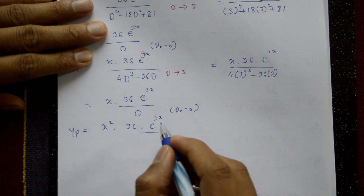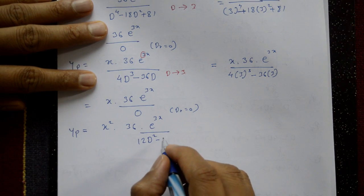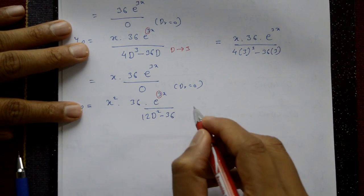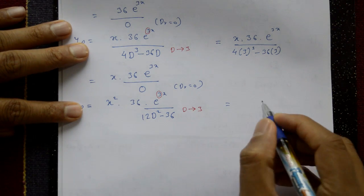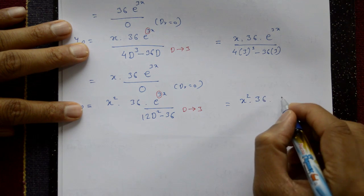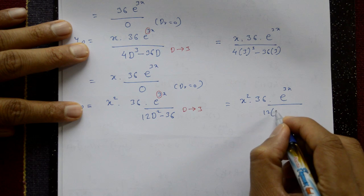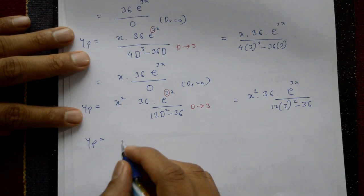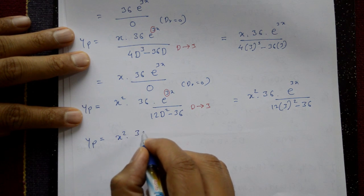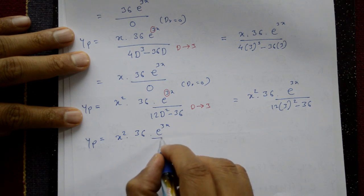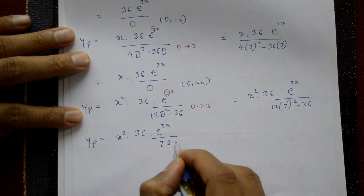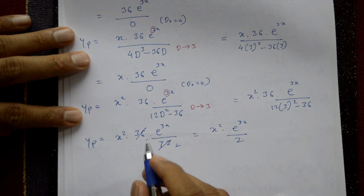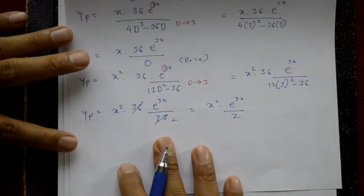Multiplying by x again gives x², and differentiating the denominator again: 12D² - 36. Now using type 1, a = 3, put D = 3: x² · 36e^(3x) / (12·3² - 36) = x² · 36e^(3x) / (108 - 36) = x² · 36e^(3x) / 72 = x²e^(3x) / 2. This is the particular integral.